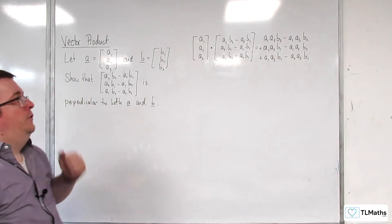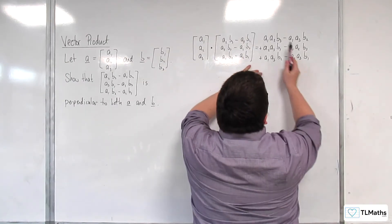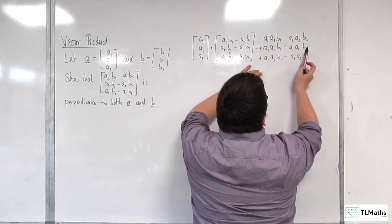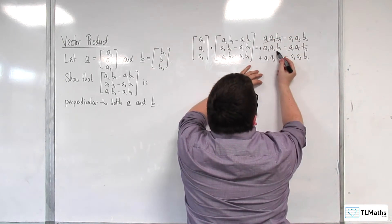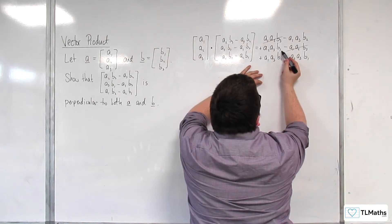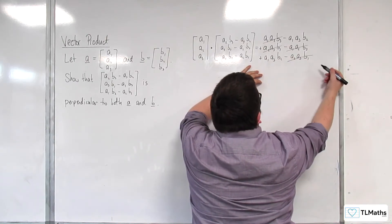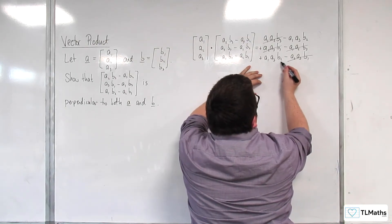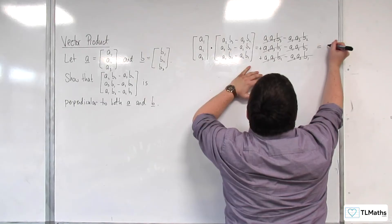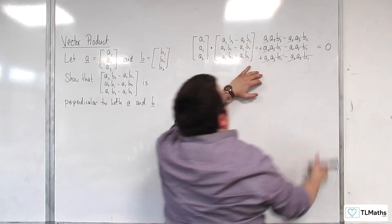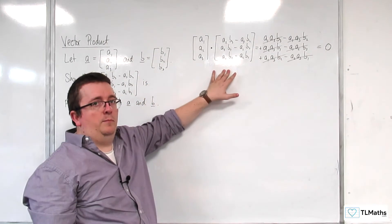Now we can see some cancellations. a1·a2·b3 and −a1·a2·b3 cancel. a2·a3·b1 and −a2·a3·b1 cancel. And a1·a3·b2 and −a1·a3·b2 cancel. So that's equal to zero, which shows that these two vectors are perpendicular.